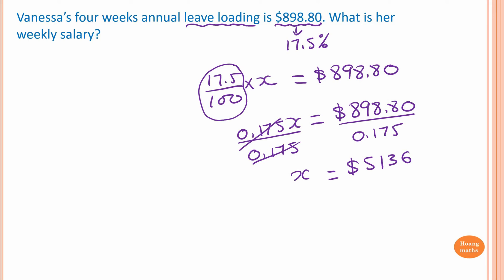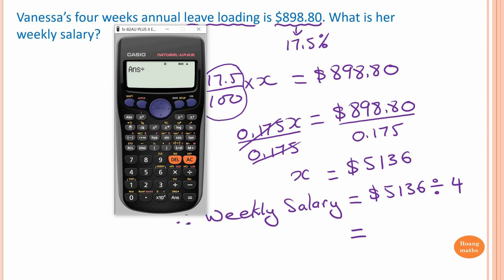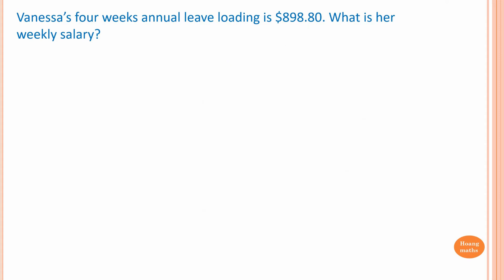That is her 4 weeks pay. Therefore, weekly salary is equal to $5,136.00 divided by 4, which is equal to $1,284.